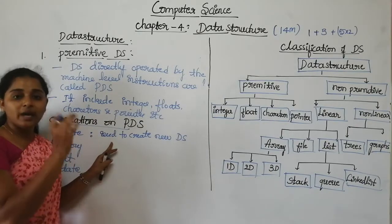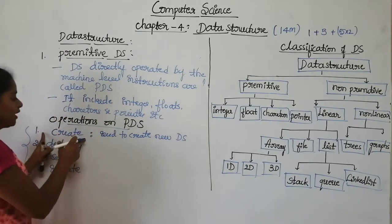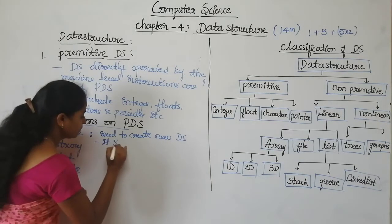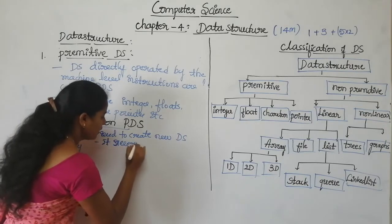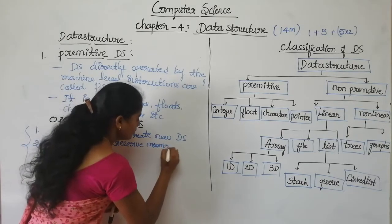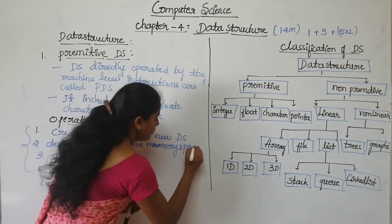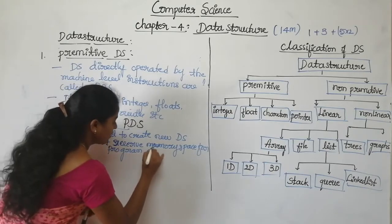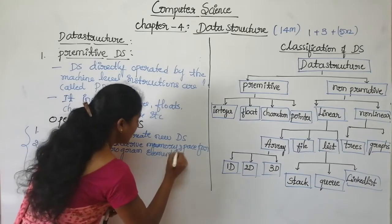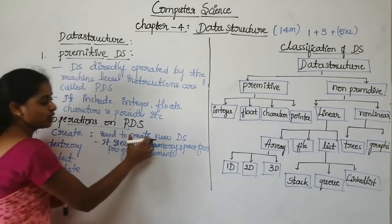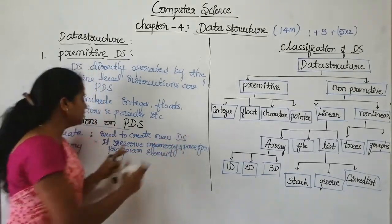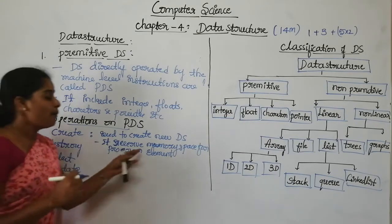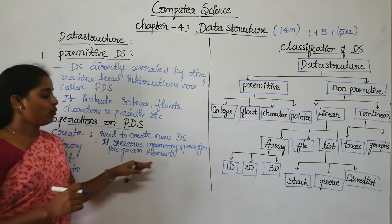The first one is the create operation. This create operation is used to create some new data structure. It also reserves the memory space for the program element.